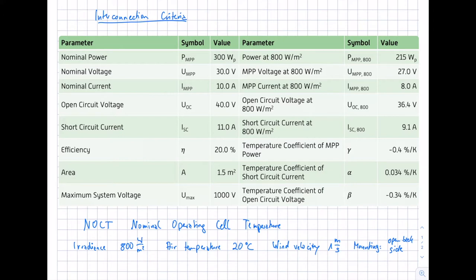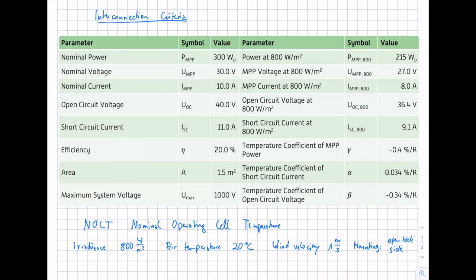The warmer the module gets, the less efficient it is, and the lower the voltage and power. We also have temperature coefficients for power, short circuit current, and open circuit voltage. These three values tell us how power, current, and voltage change with increasing or decreasing module temperature relative to the STC temperature of 25°C. For example, the temperature coefficient for open circuit voltage shows that an increase of 1°C reduces the voltage by minus 0.34%, and if the cell temperature is below STC, the voltage increases.